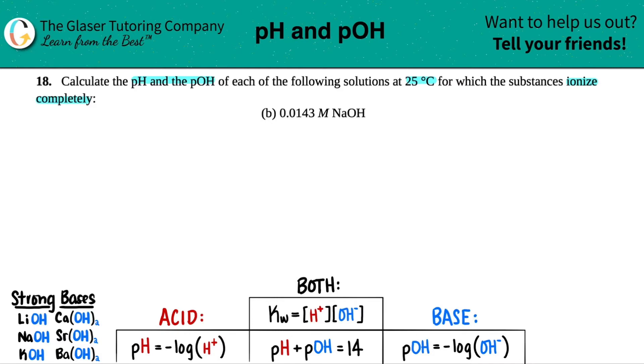Okay. So first things first is maybe on a quiz or a test, they don't give you the hint in which the substance will ionize completely. Now there are three species or substances that ionize completely: strong acids, strong bases, and salts.